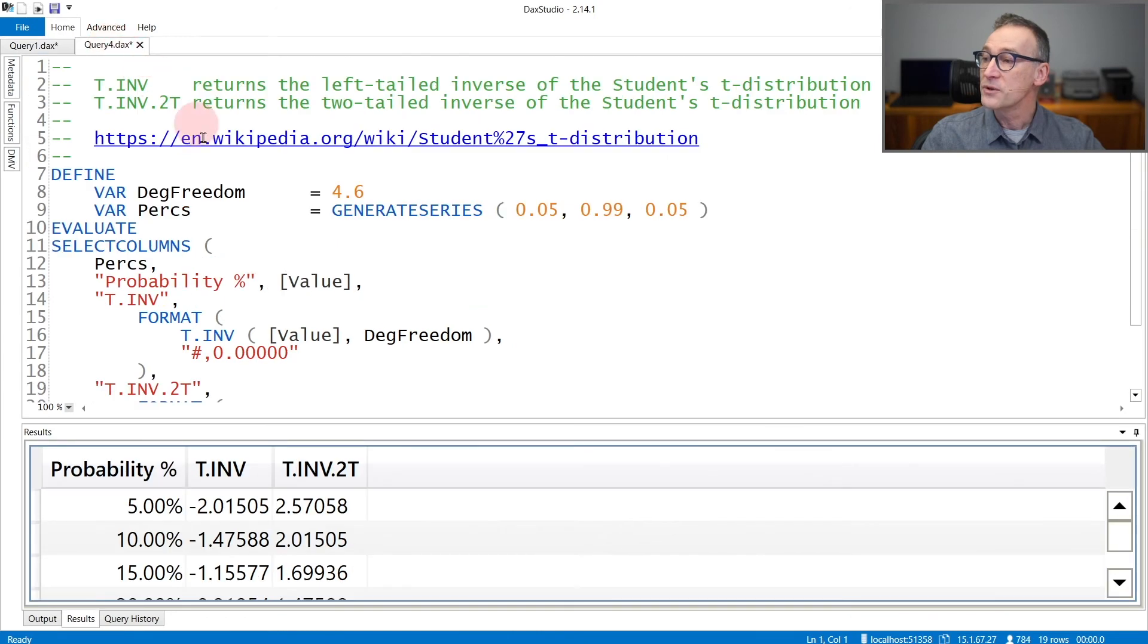You also have the inverse function. So given a percentage, a probability, you can compute the inverse function for both the Student's t or the two-tailed Student's t. And in the example, I use a degree of freedom of 4.6.